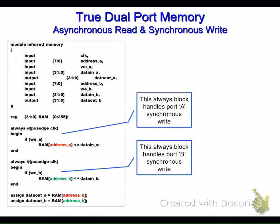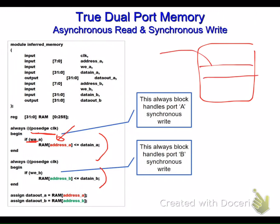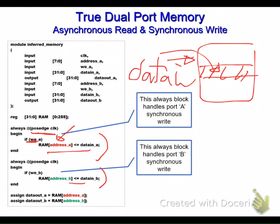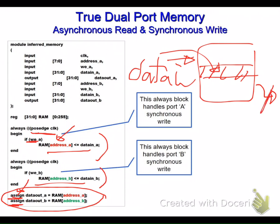If we want to write synchronously, we do exactly the same for port A and port B — on a positive edge clock, if write enable is set, write the data input to that location. However, if we want to read asynchronously, we don't need a clock. We just use an assign statement, without an always block, to assign data output whatever is at that particular address.